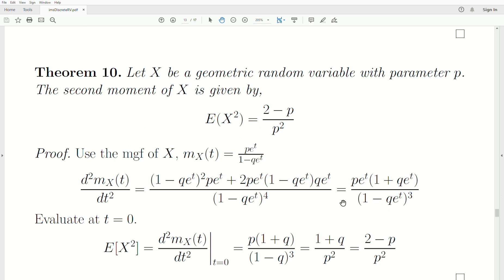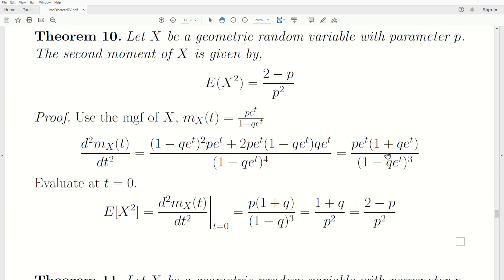So on my paper, there were a couple steps between the end here. But now we evaluate this second derivative of the moment generating function at T equals zero. So the expected value of X squared, second derivative of the moment generating function evaluated at T. E to the zero is just one. So all those E to the Ts become one. One of these, this is P squared in the denominator. One of them cancels with the P and we're left with one plus Q over P squared. But Q is one minus P. So we get two minus P over P squared.